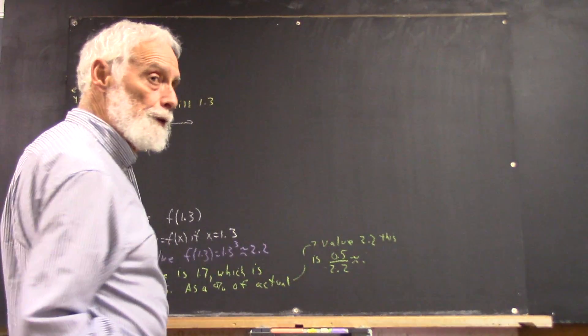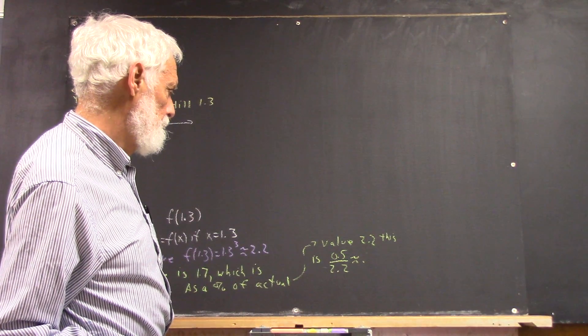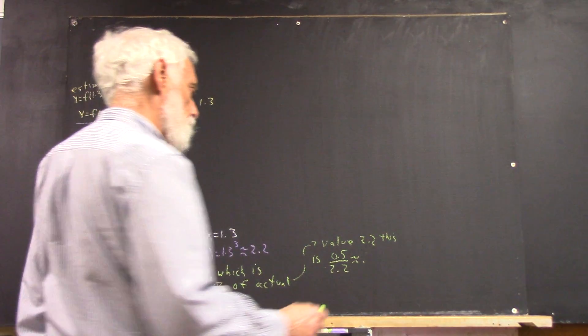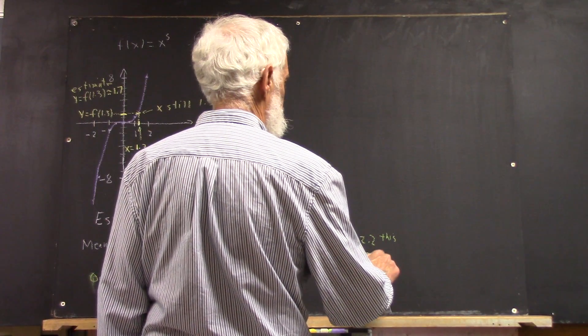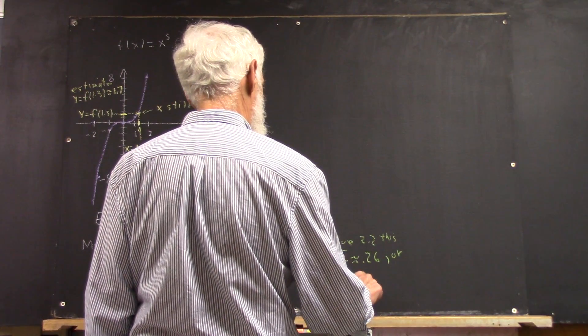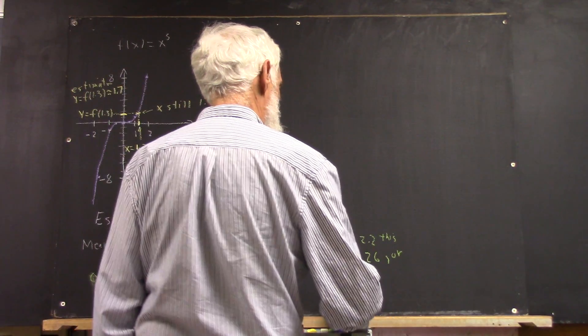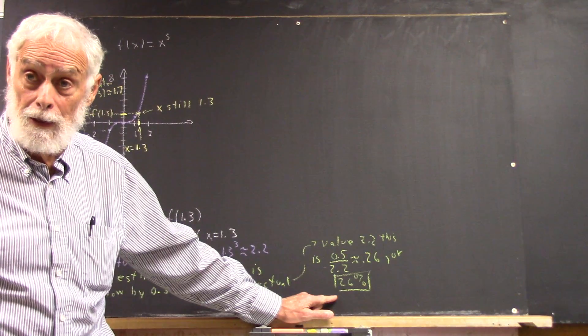0.5 over 2.2 is pretty close to what? It's approximately 0.26, I think. Or 26%. So we're off by 26%. That's not terrible. But with a careful graph, we can probably get that down lower than 10% for this particular estimate. And when you do these, I want you to try to do an accurate estimate because it helps you look more carefully and closely at what a graph is telling you, which is very important.